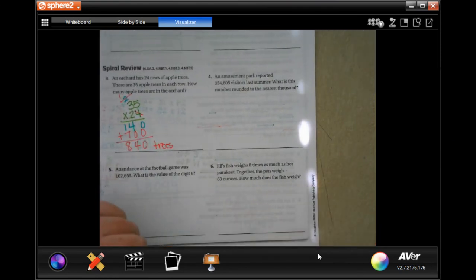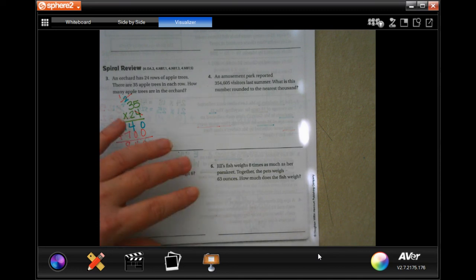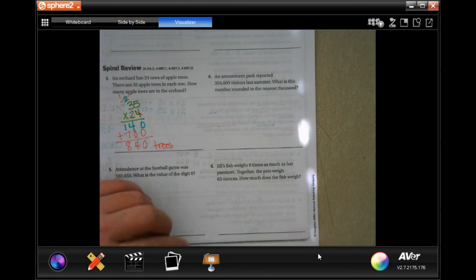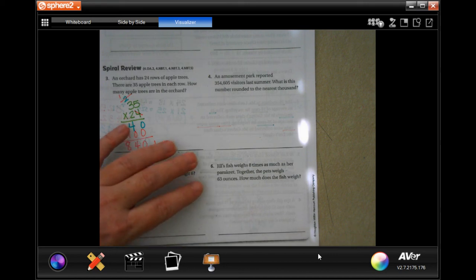I know I'm moving kind of fast, guys, but you guys can always go back, rewind, watch it again if you need to. No big deal. An amusement park reported 354,605 visitors last summer. What is the number rounded to the nearest thousand?